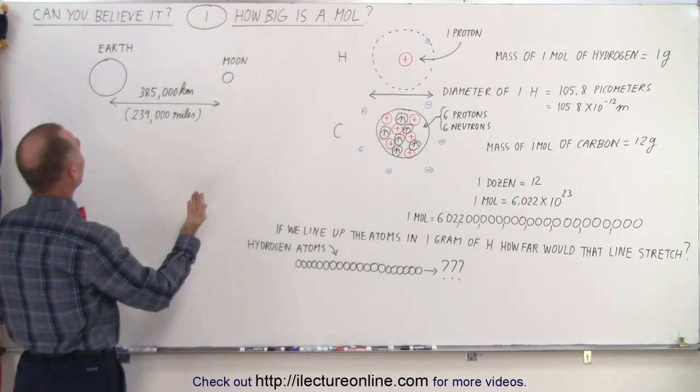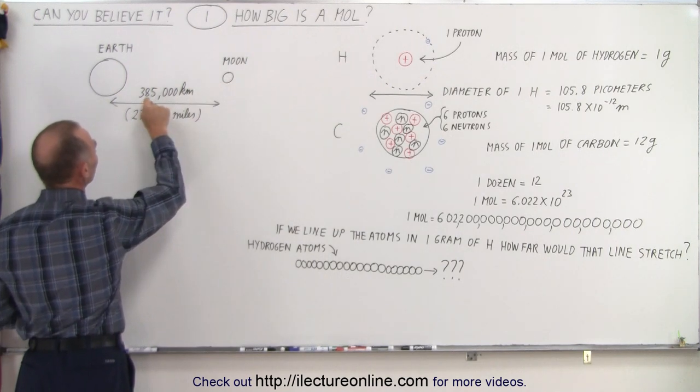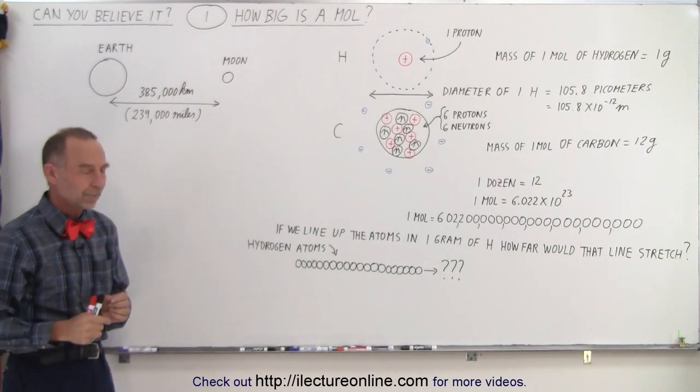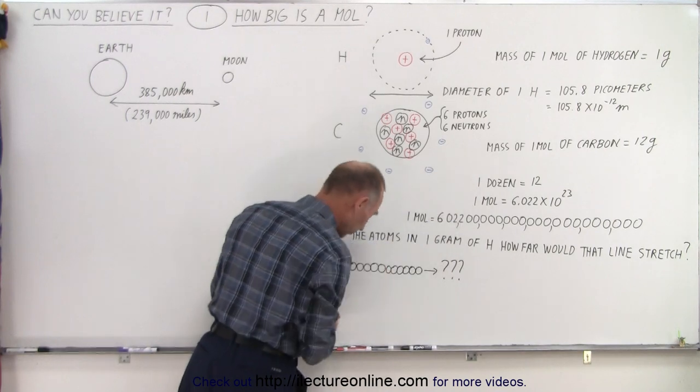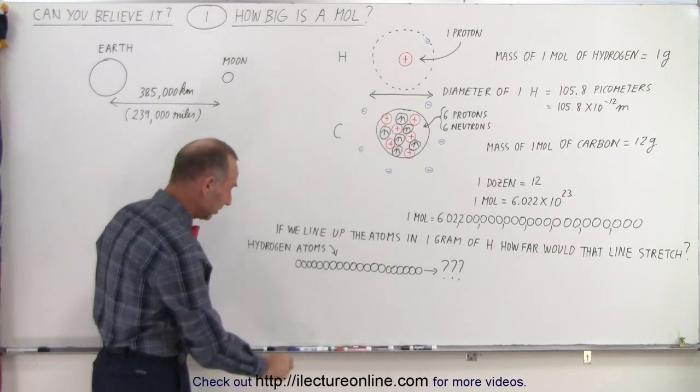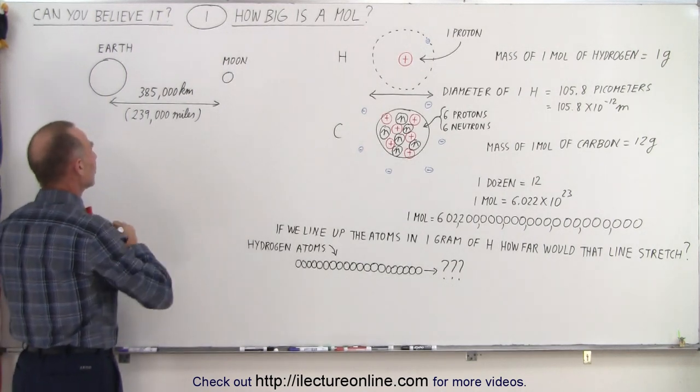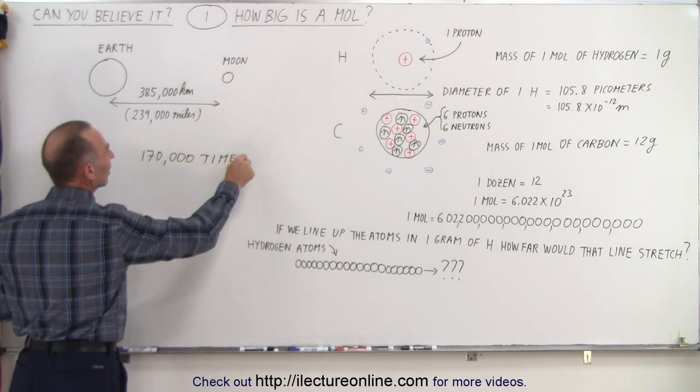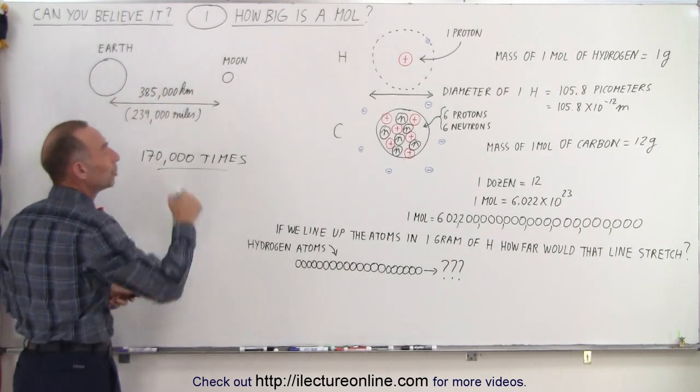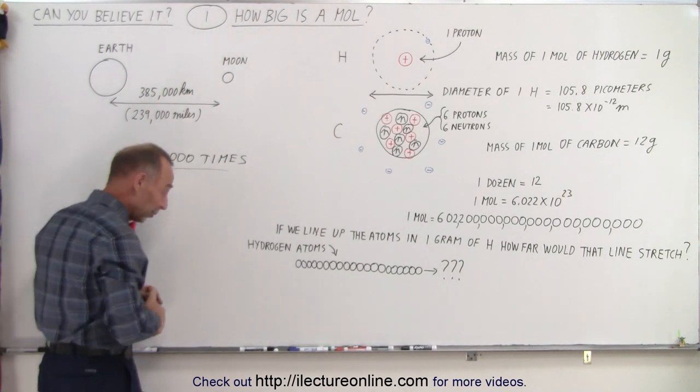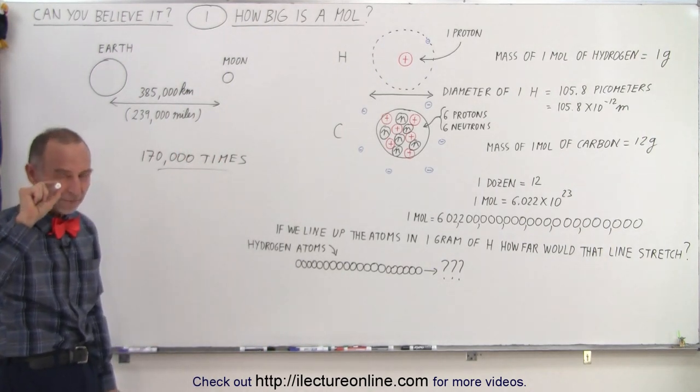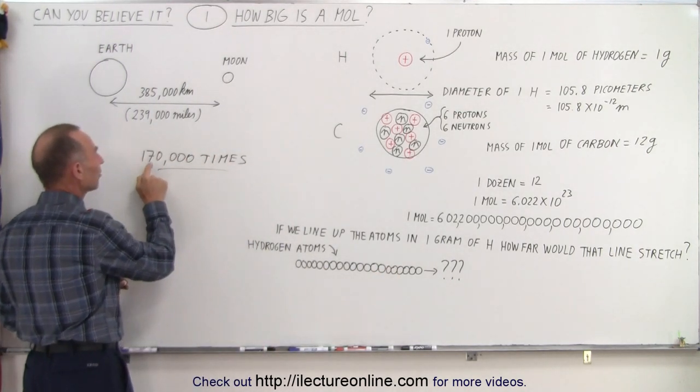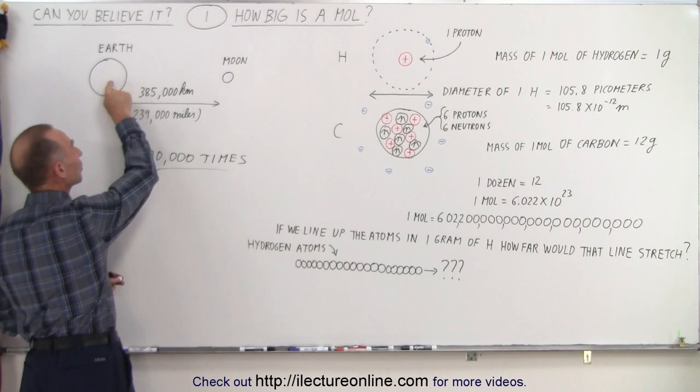Well, to give us a good comparison, here's the distance between the Earth and the Moon. The distance is 385,000 kilometers, or in miles is 239,000 miles from the Earth to the Moon. Well, this line of hydrogen atoms, if you have one mole of them—one gram of hydrogen—it would line up to make a line where it would be 170,000 times the distance between the Earth and the Moon. Imagine that. It's almost beyond belief. I can almost not believe it. You take one gram of hydrogen, the atoms that would add up to one gram of hydrogen, and you line them up, you would get a line that would be 170,000 times the distance between the Earth and the Moon.